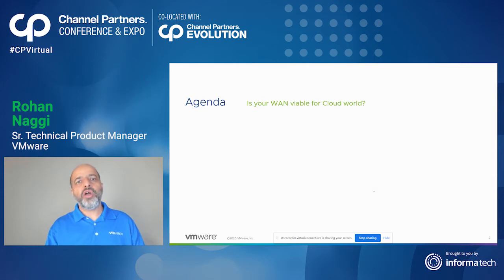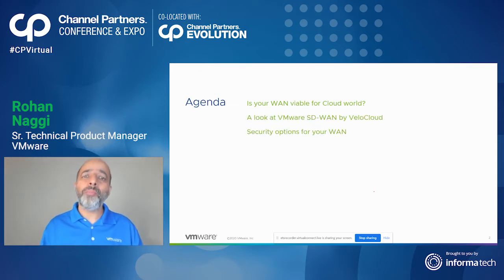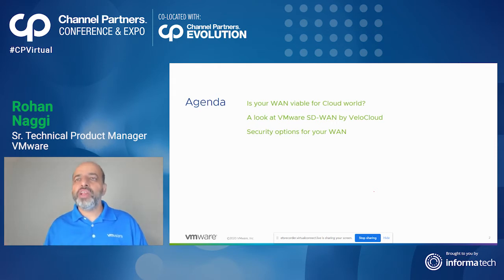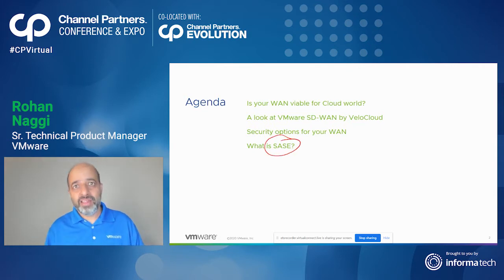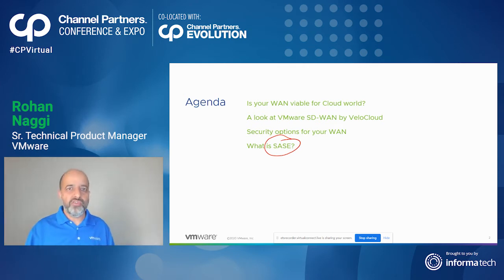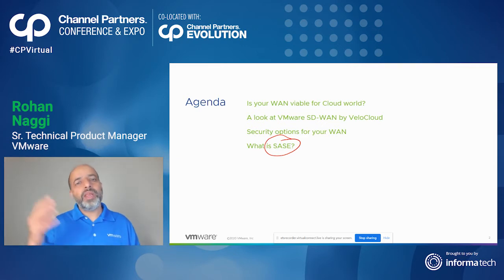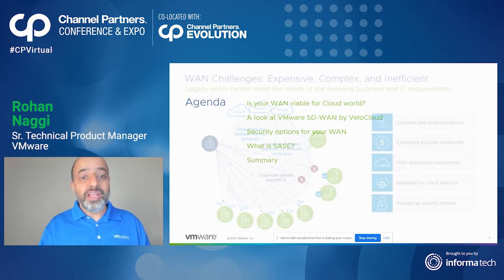In this webinar, we'll talk about security and VMware SD-WAN — why security is a vital component, what are the challenges, what's the problem statement, and what options VMware SD-WAN provides to solve this security problem. We'll also talk about the VMware SD-WAN cloud-delivered security solution, the SASE approach for an enterprise to strengthen their security posture, quickly deploy branch sites by applying the latest defense mechanisms, reducing latency, and obviously, the cost.